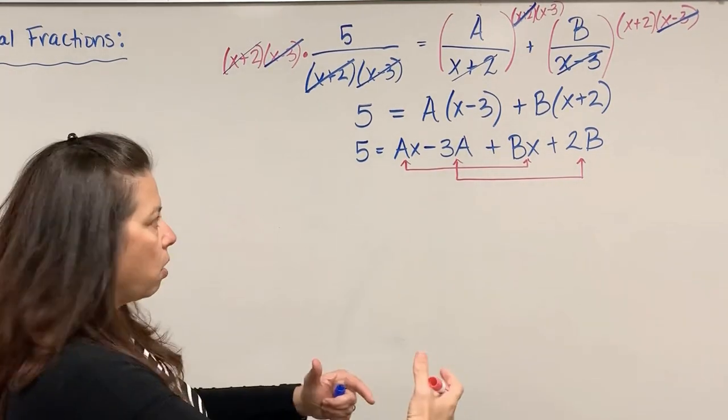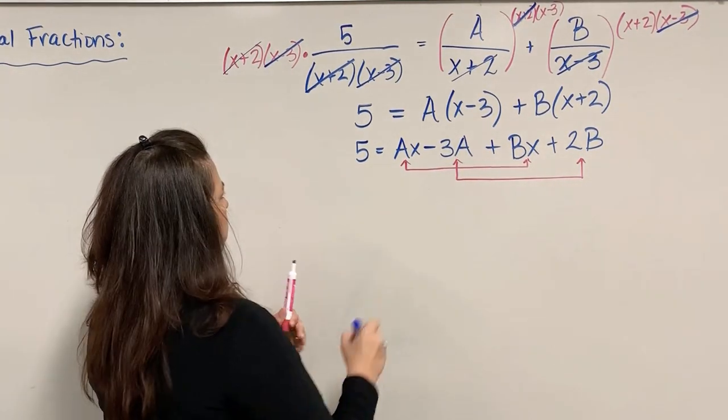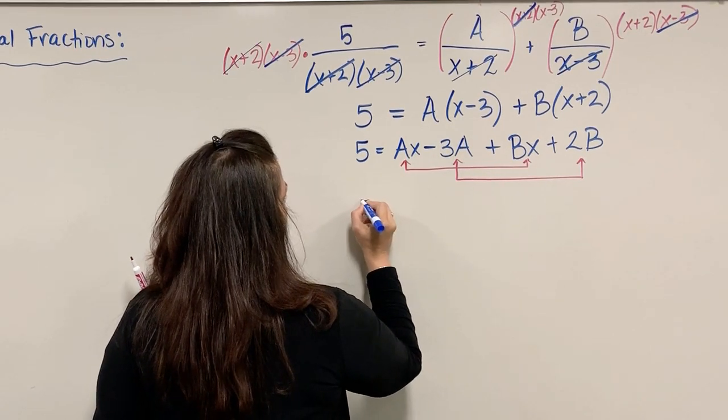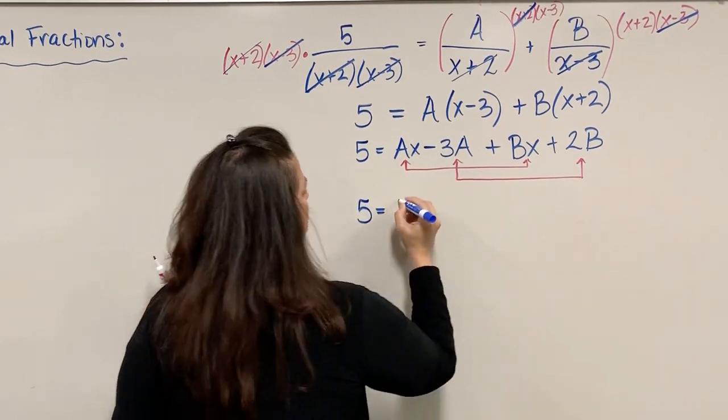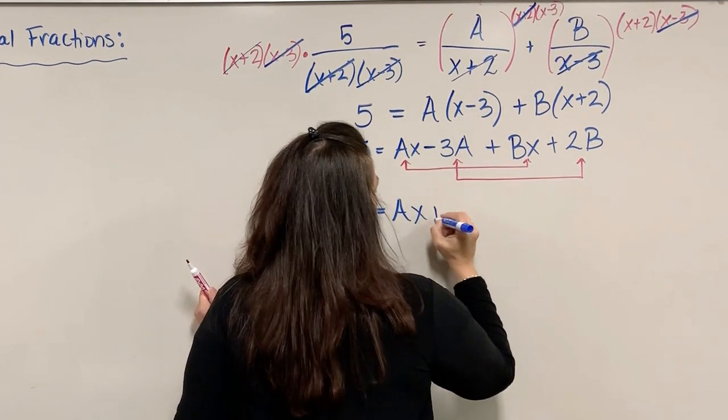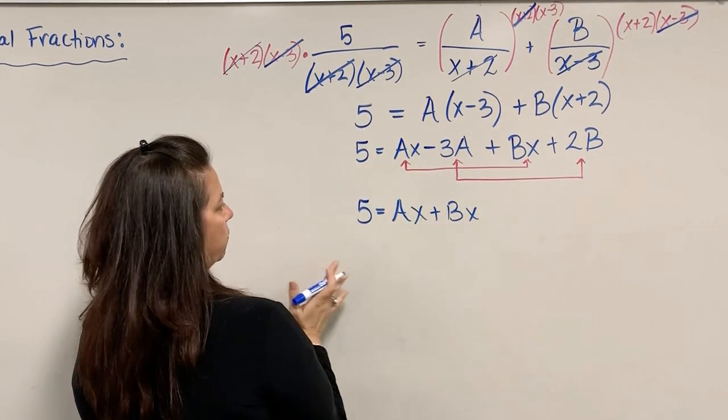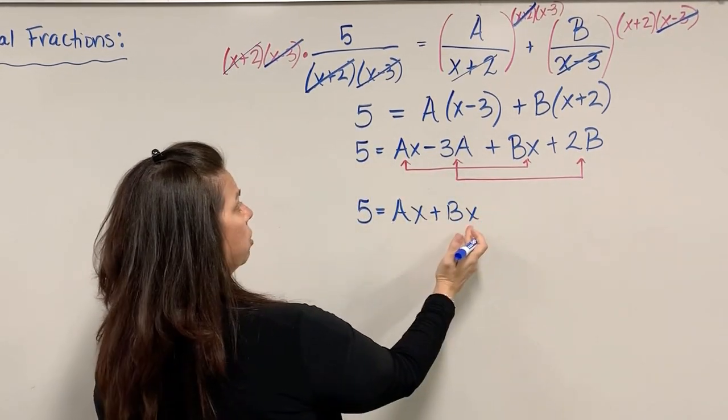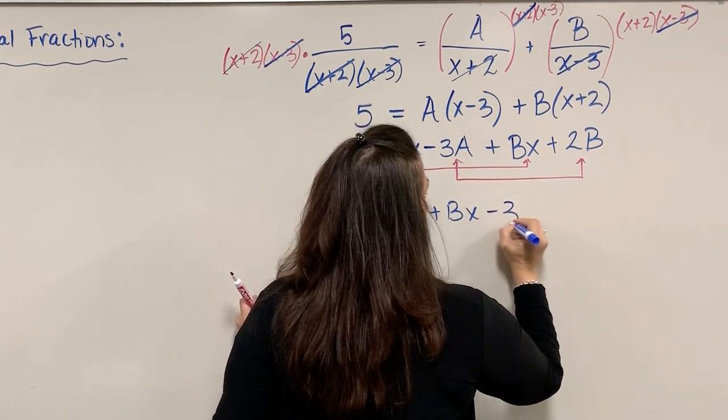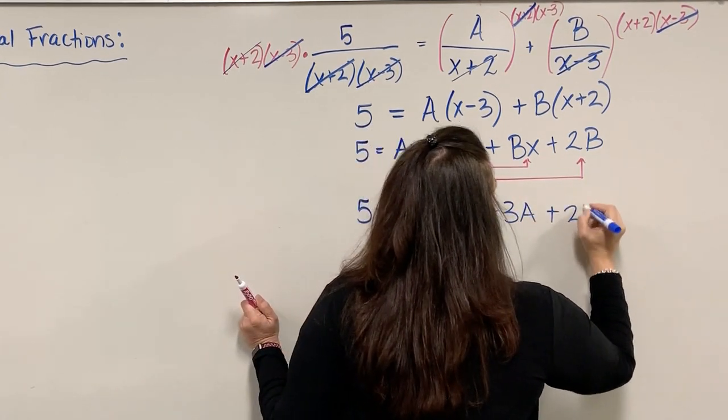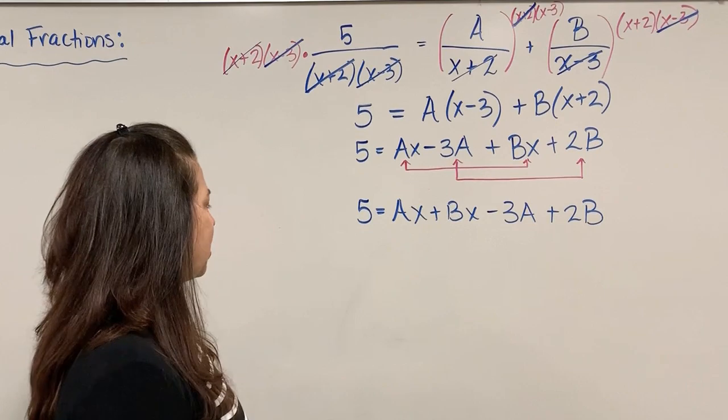I'd like to organize things so the stuff that has x's are side by side. The stuff that doesn't also group together. So we have 5 = Ax + Bx - 3A + 2B.